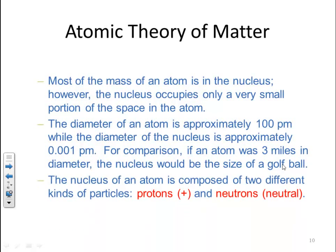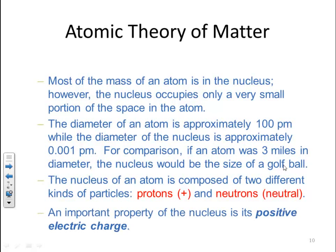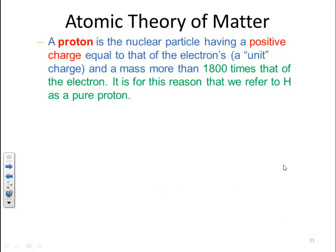The nucleus of an atom is composed of two different kinds of particles: protons, which are positively charged, and neutrons, which are neutral. An important property of the nucleus is its positive electrical charge. A proton is a nuclear particle having a positive charge equal to that of the electron, and a mass more than 1,800 times that of the electron.